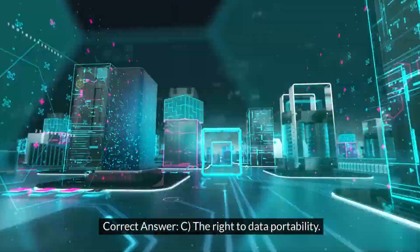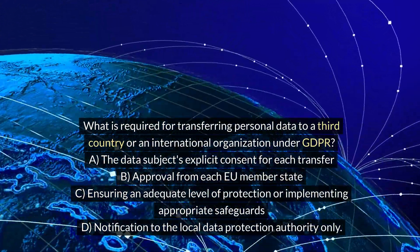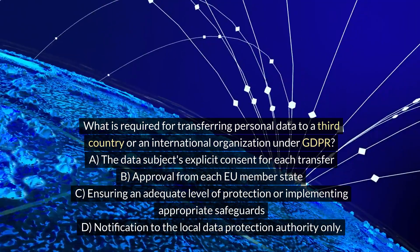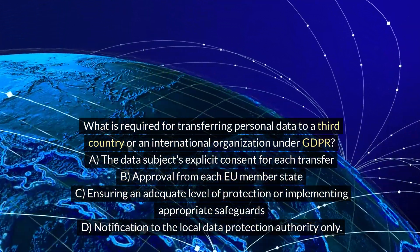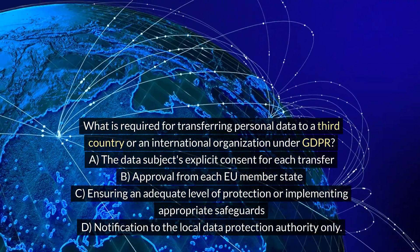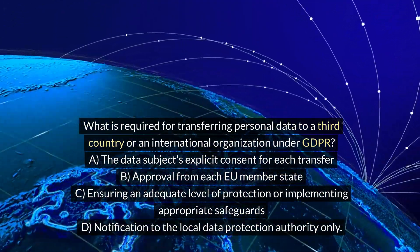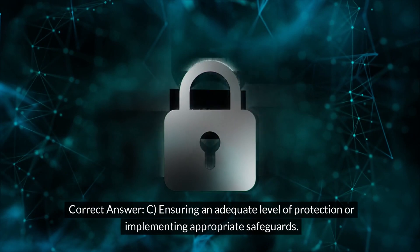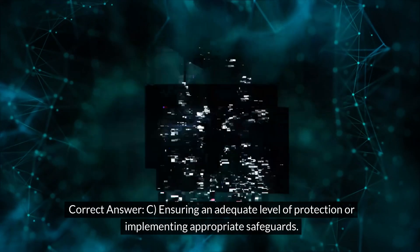What is required for transferring personal data to a third country or an international organization under GDPR? A. The data subject's explicit consent for each transfer. B. Approval from each EU member state. C. Ensuring an adequate level of protection or implementing appropriate safeguards. D. Notification to the local data protection authority only. Correct answer: C. Ensuring an adequate level of protection or implementing appropriate safeguards.